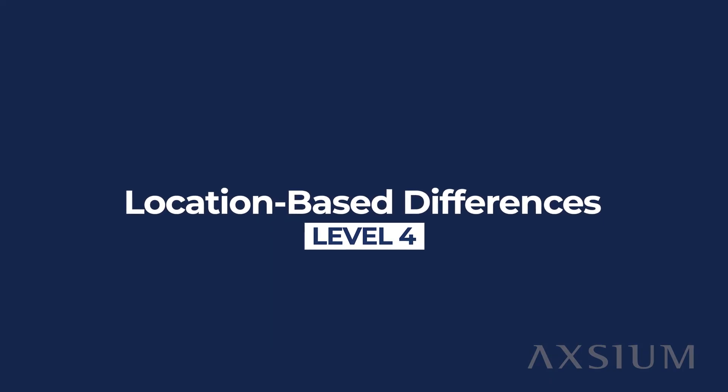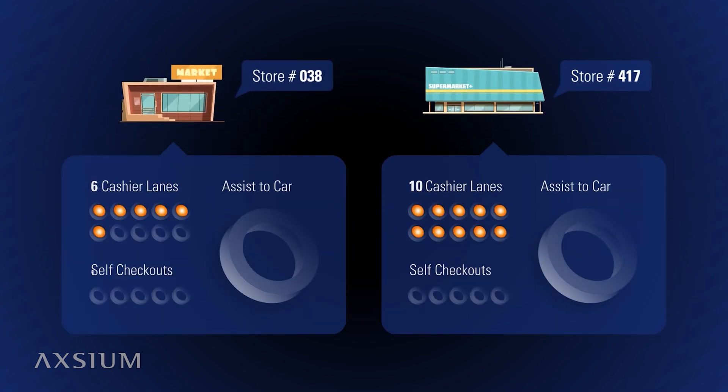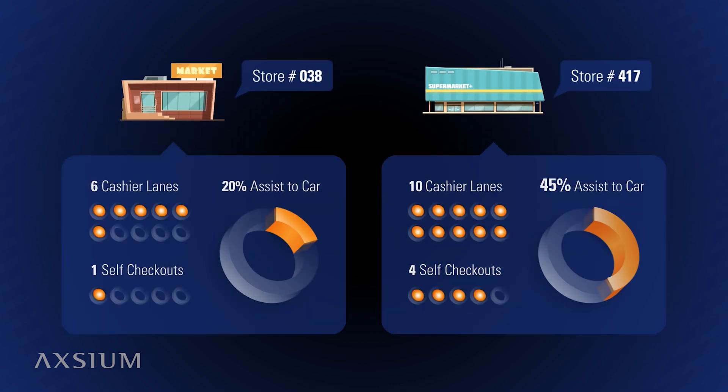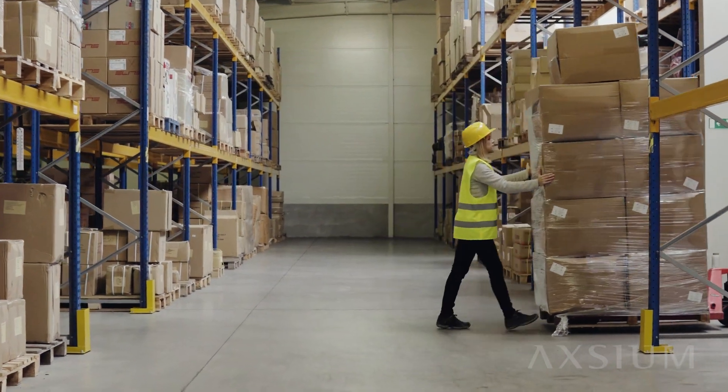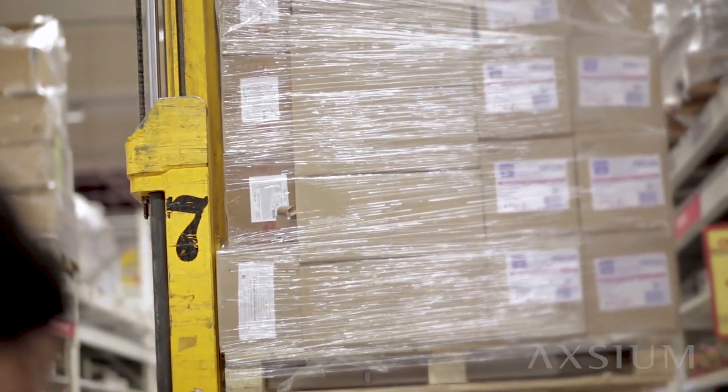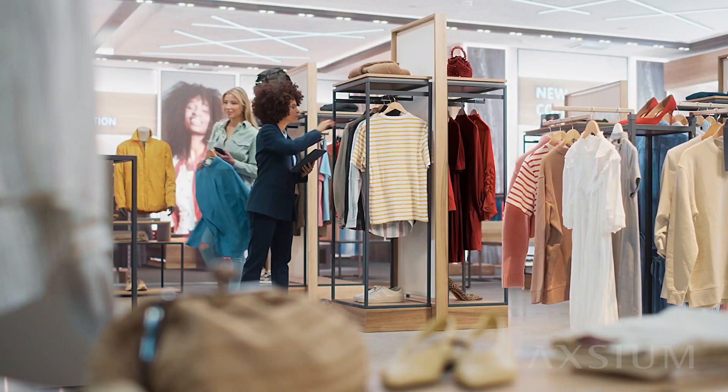Level four: one important concept associated with your labor model is recognizing that two stores that may look similar are going to have different labor needs because they have different equipment or different attributes. For example, with receiving, having a dolly, a handjack, or a forklift is going to change the amount of time it takes to get cartons or pallets off a truck. On the front of the house, square footage, number of cash registers, and number of entrances may all influence how one store gets more or less labor than another, even though they have the same amount of demand.